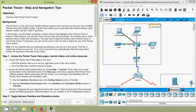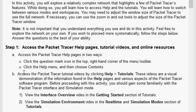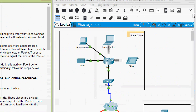Coming to our activity, we can see the objectives overview of the Packet Tracer program. We will go to Step 1: access the Packet Tracer help pages, tutorial videos, and online resources. Coming to part A, we can access the Packet Tracer help pages in two ways: click the question mark icon in the top right corner of the menu toolbar, or click the Help menu and choose Contents.